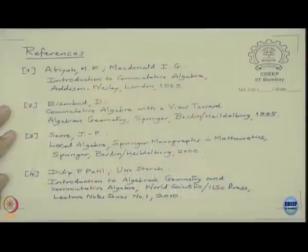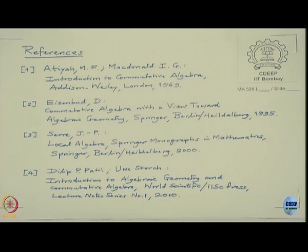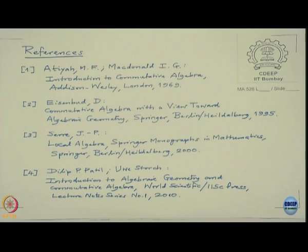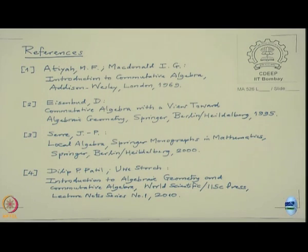First, I want to give some references. You would have studied probably in commutative algebra 1 or algebra 2 — I call it commutative algebra 0. So that is Atiyah-Macdonald's very famous book, very well written with a lot of exercises. The other book is Eisenbud's commutative algebra with a view towards algebraic geometry.